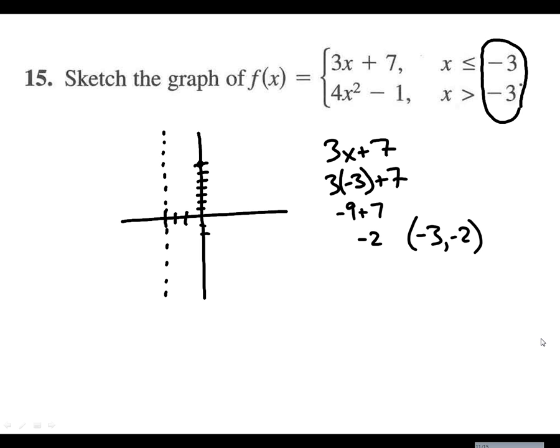That means that this line is down here, and it's going to be a solid dot, and it's going to be going to the left. So if I connect with them, then it's going to be solid going this way because we're less than or equal to negative 3.